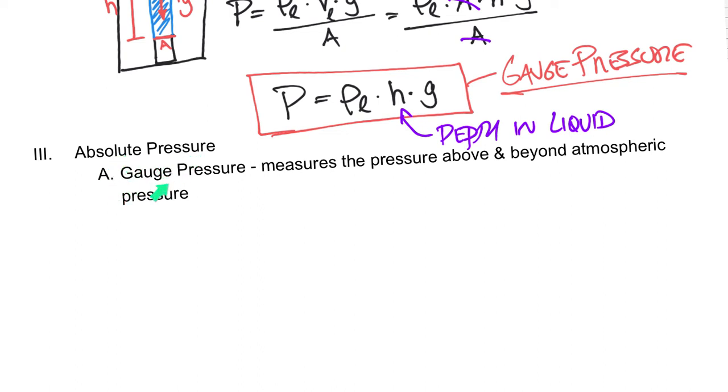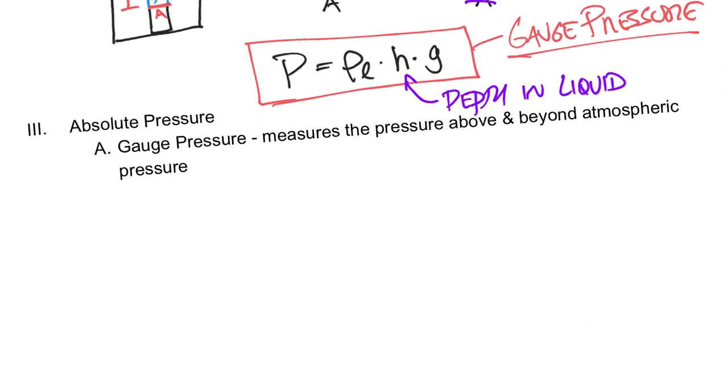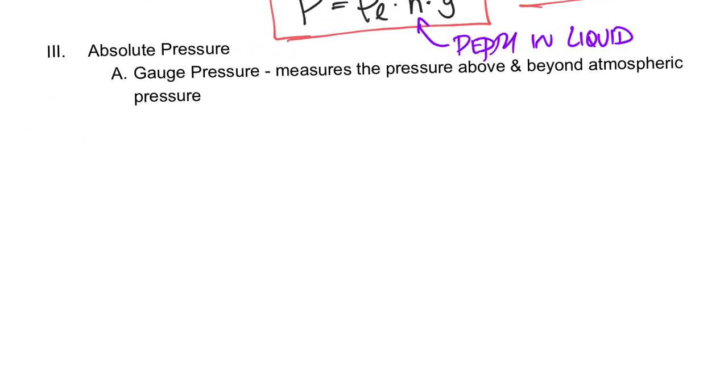So now that's gauge pressure and gauge pressure is different than absolute pressure. And that absolute pressure is basically gauge pressure plus atmospheric pressure. So gauge pressure measures the pressure above and beyond atmospheric pressure. So in the lab that we performed, remember we had a container that had water in it or a fluid.